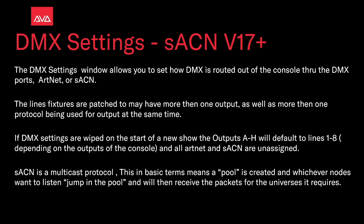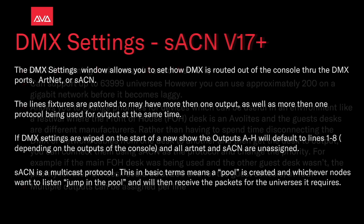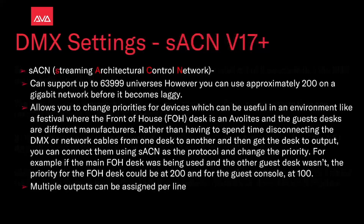Streaming ACN is a multicast protocol. In basic terms, this means that a pool is created, and whichever nodes want to listen jump into the pool and will see the packets for the universe it requires. Streaming ACN, or Streaming Architectural Control Network, can support up to 63,999 universes. However, you get about 200 on a gigabit network before it becomes laggy.